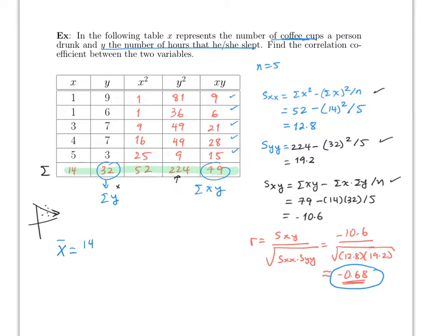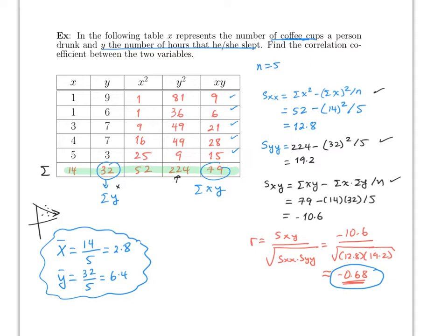Also find x-bar and y-bar from this table for use on the next page. x-bar = sum of x divided by n = 14/5 = 2.8, and y-bar = sum of y divided by n = 32/5 ≈ 6.4. You will need these for the regression line.